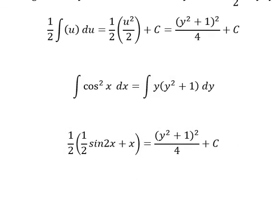Now we multiply both sides by 4. So we will have sin 2x plus 2x equals to this one.